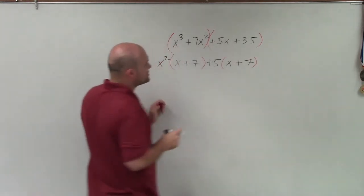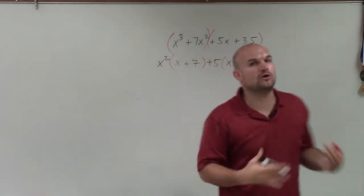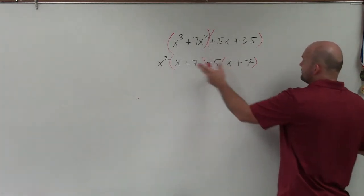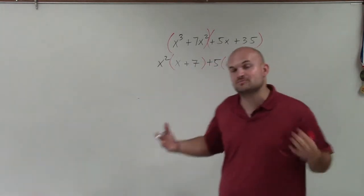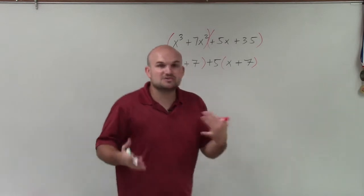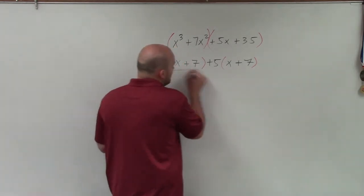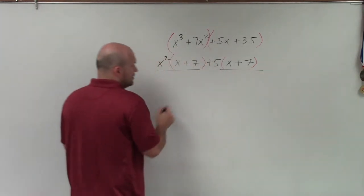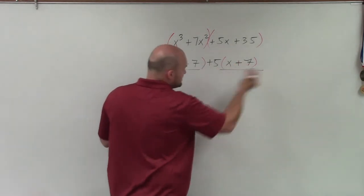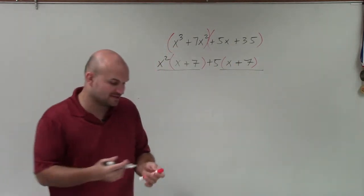Now, by doing this, what I want you to notice, when factoring by grouping works, you can see that inside these red parentheses is now the exact same expression, which is x plus 7. So since that is common amongst both of these expressions, the x times x plus 7 and the 5 times x plus 7, since they both share an x plus 7, I can now factor out an expression x plus 7.